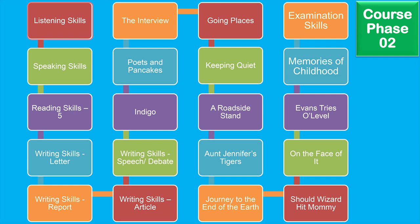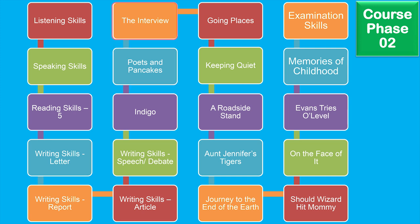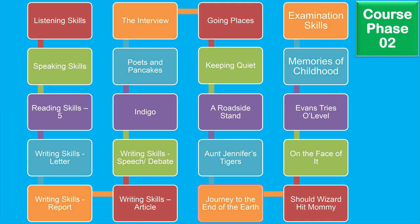In the second phase of the course we will cover one module in listening, one module in speaking, one module in reading, and in writing skills we will cover letter writing, writing skills report, writing skills article, writing skills speech and debate. From the textbook Flamingo we will cover Indigo, Poets and Pancakes, The Interview, and Going Places. In poetry we will cover Keeping Quiet, A Roadside Stand, and Aunt Jennifer's Tigers. From the book Vistas we will cover Journey to the End of the Earth, Should Wizard Hit Mommy, On the Face of It, Evans Tries an O-Level, and Memories of Childhood.